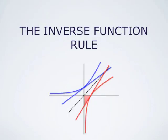The inverse function rule allows us to compute the derivative of the inverse function of a known function in terms of the derivative of the known function. The picture here illustrates that situation. The blue curve is the graph of the function. The red curve is the graph of its inverse function. It is obtained by reflecting the blue curve in the line y equals x.